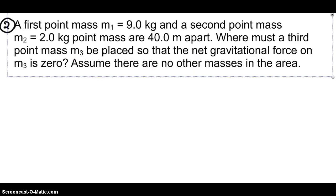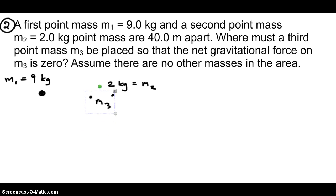Next one. Here it is. We have 2 point masses. The first is 9 kilograms. The second is smaller, only 2 kilograms. And where does the third go? It's going to have to be closer to the little mass and farther from the big mass. This distance is r13. That distance is r23. And together they add up to 40 meters.